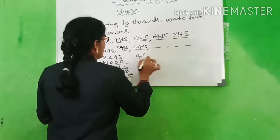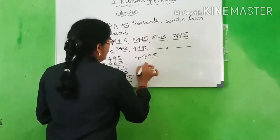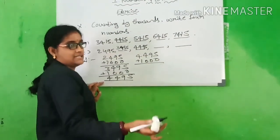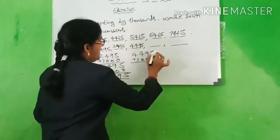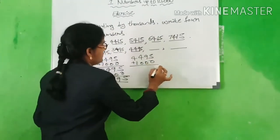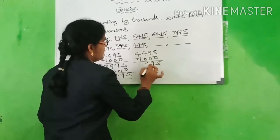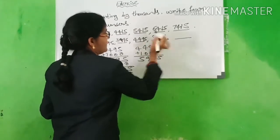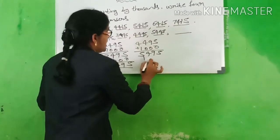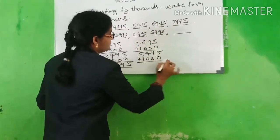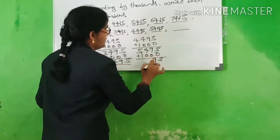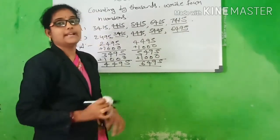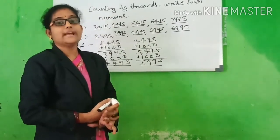Add 4,495 plus 1000 to get the next 1000. 5 plus 0 is 5, 9 plus 0 is 9, 4 plus 0 is 4, 4 plus 1 is 5. We get 5,495. Next, add 1000 more: 5, 9, 4 plus 0 is 4, 5 plus 1 is 6. What is the answer? 6,495. Understand this one?